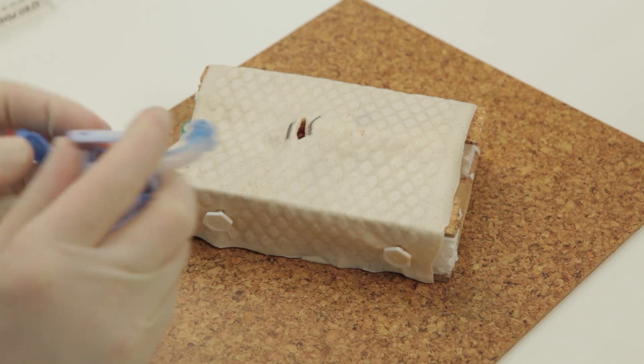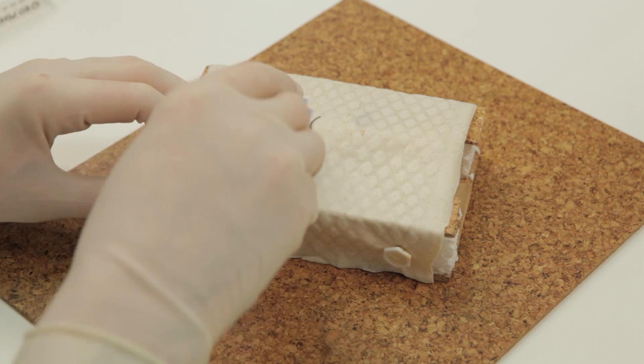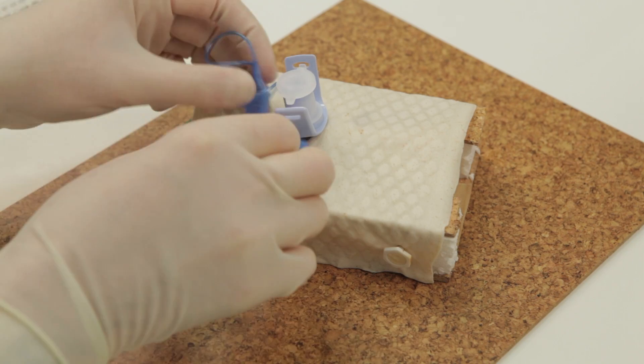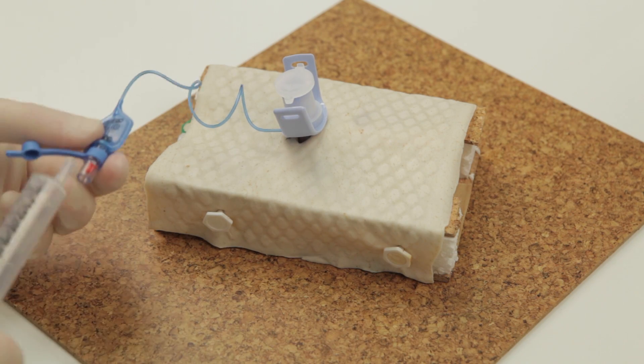The tracheostomy tube should then be inserted as shown. Inflate the cuff, having checked there are no leaks beforehand.